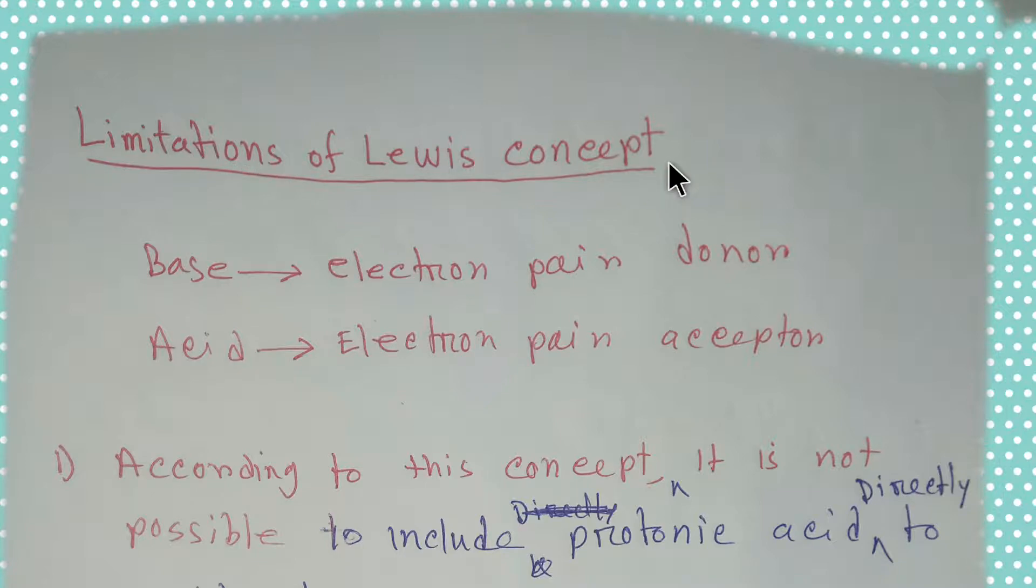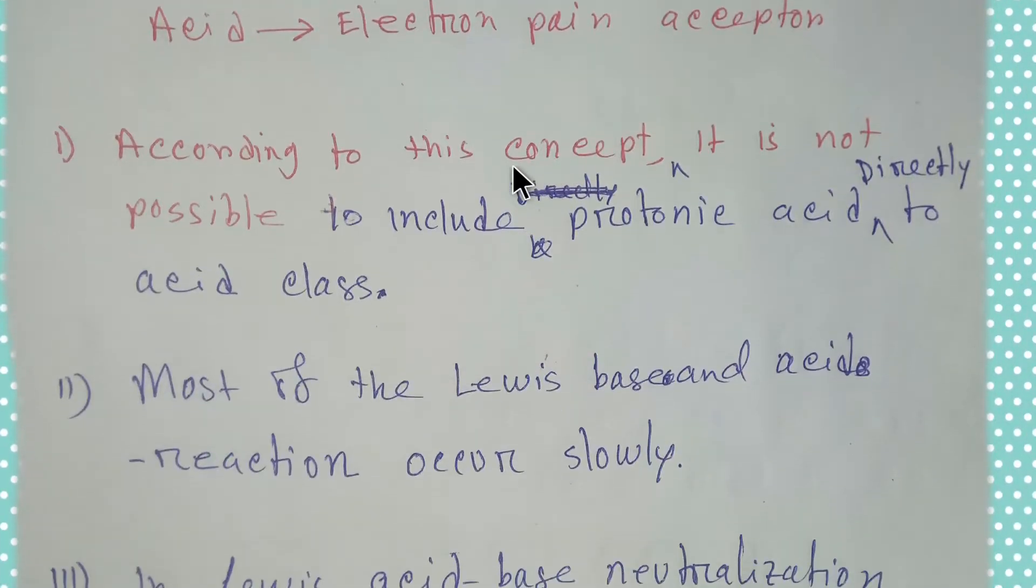But everything has limitations, so we'll learn the limitations of Lewis concept. According to Lewis concept, it is not possible to include protonic acid directly to acid class. That is, HCl or sulfuric acid, we cannot add into the class of acid.